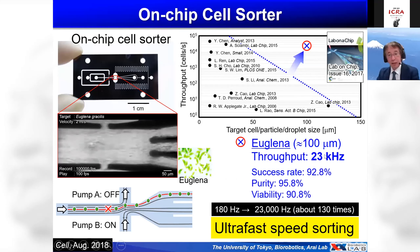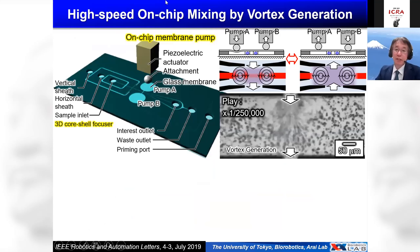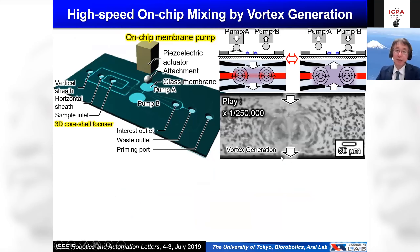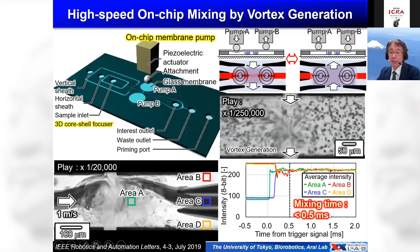Separation of relatively large objects like euglena (around 100 micrometers) was really difficult, but using this on-chip cell sorter we can realize really high-speed separation. Another application is mixing: because the speed of the piezo actuator is really high, we can generate vortex inside the microfluidic chip, and the mixing time is less than 0.5 milliseconds.